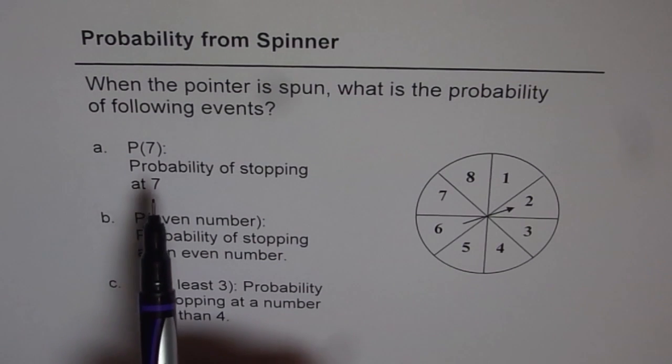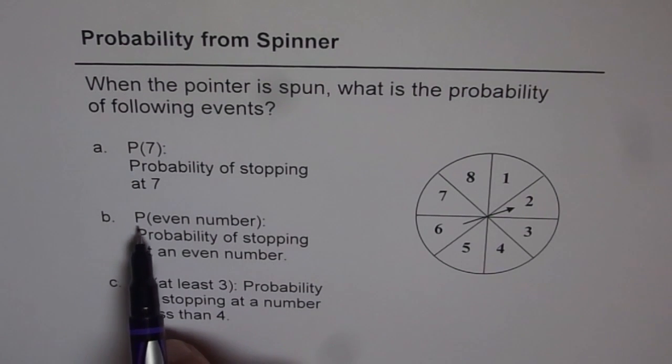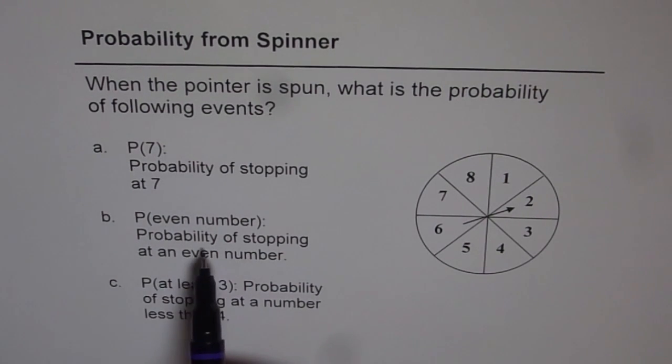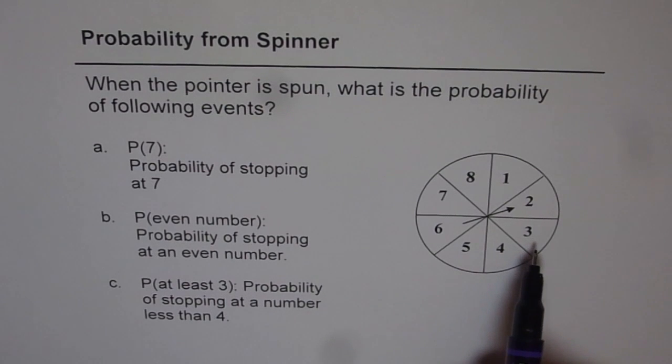The very first one is P(7), which means probability of stopping at 7. The next one is P(even number), or probability of the pointer stopping at an even number. And part C is P(at least 3), that is probability of stopping at a number less than 4, or at least 3.